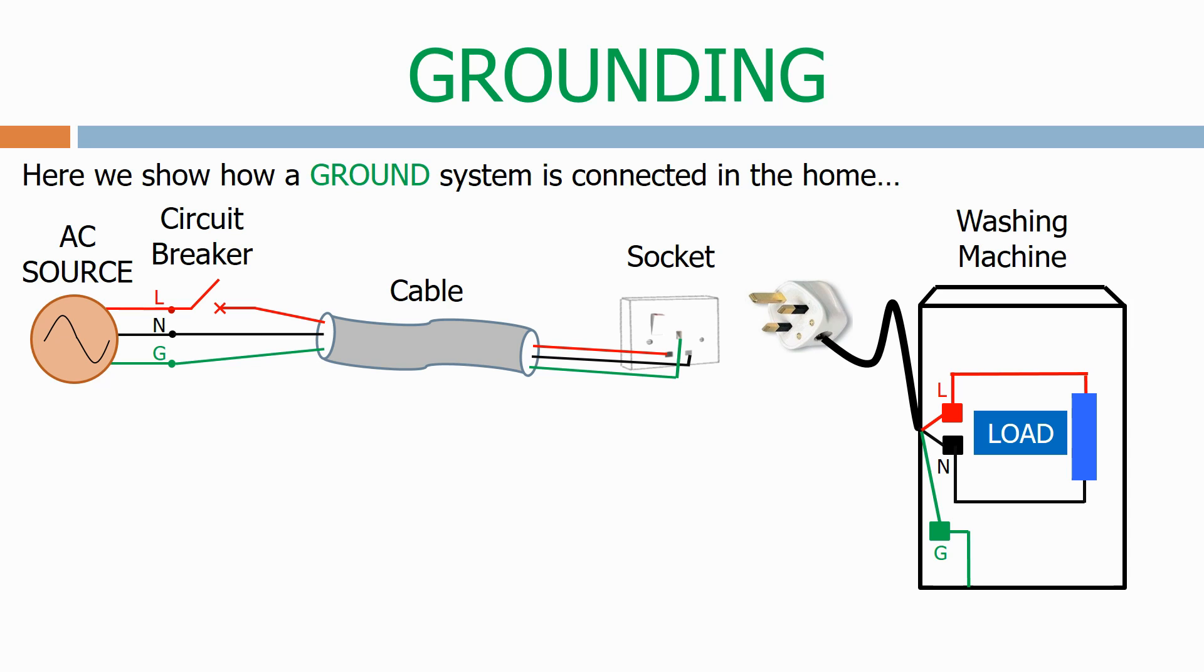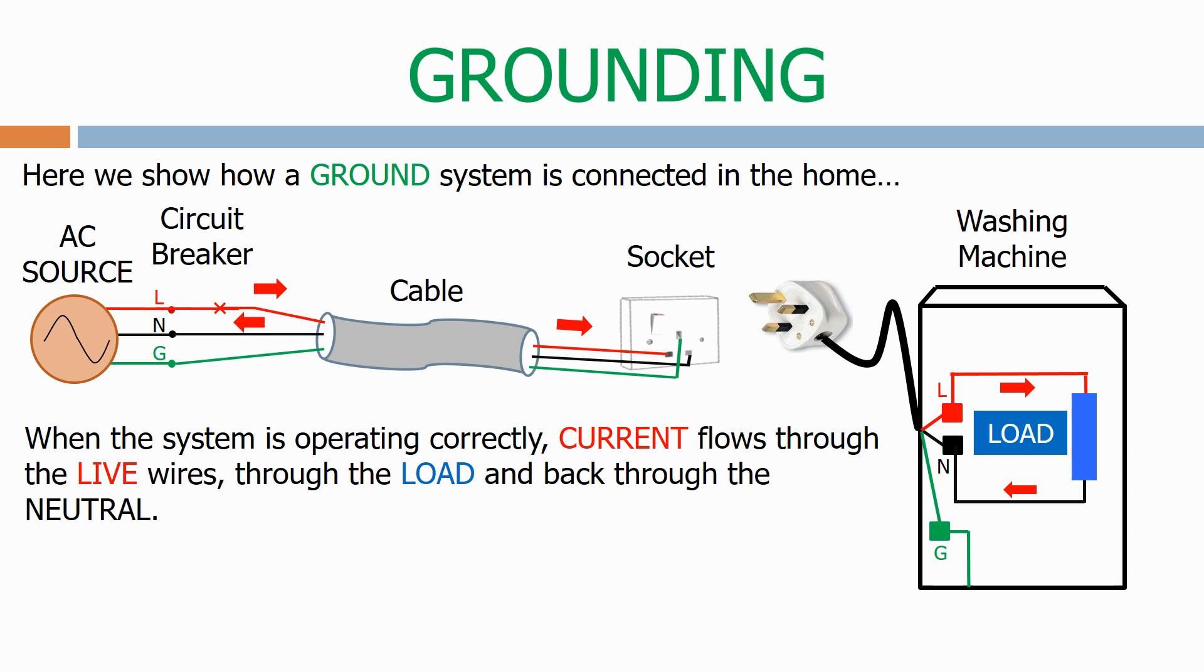Let's now close the circuit breaker turning on the washing machine. When the system is operating correctly current flows through the live wires, through the load and back through the neutral. No current flows through the ground wire.